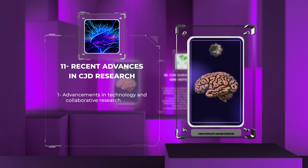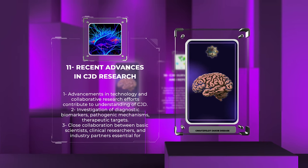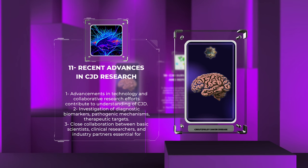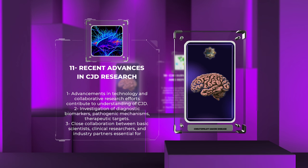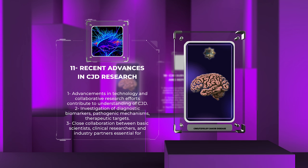Advancements in technology and collaborative research efforts have contributed significantly to our understanding of CJD. Scientists are investigating novel diagnostic biomarkers, such as cerebrospinal fluid proteins, prion protein seeding assays, and neuroimaging markers, to improve early detection and tracking of disease progression. Research is also focused on unraveling the underlying pathogenic mechanisms, searching for potential therapeutic targets, and developing experimental treatments. Close collaboration between basic scientists, clinical researchers, and industry partners is essential for driving innovation in CJD research.